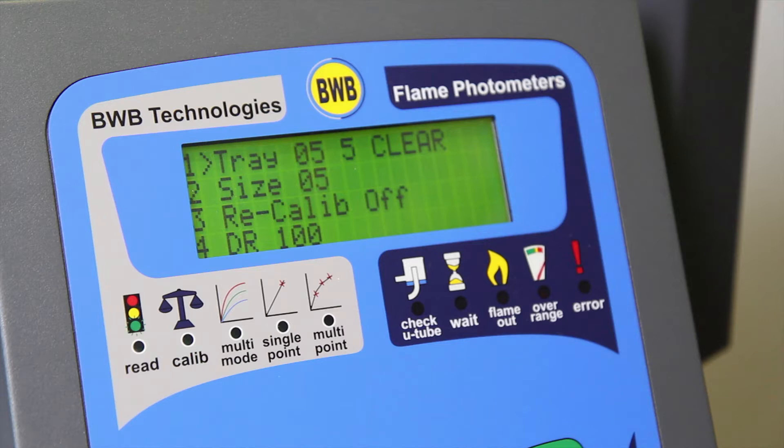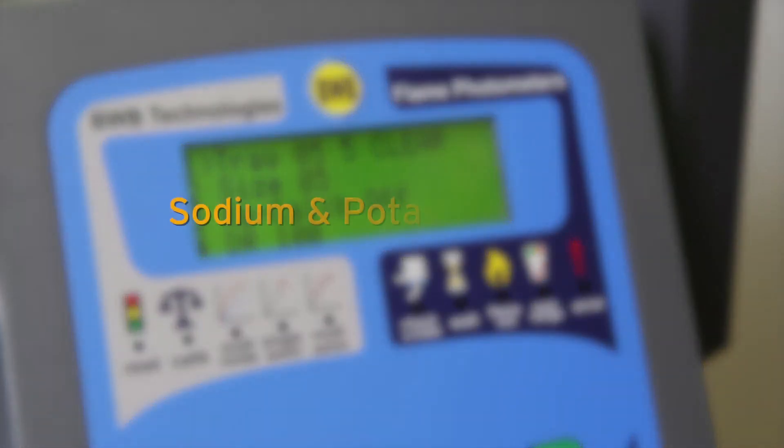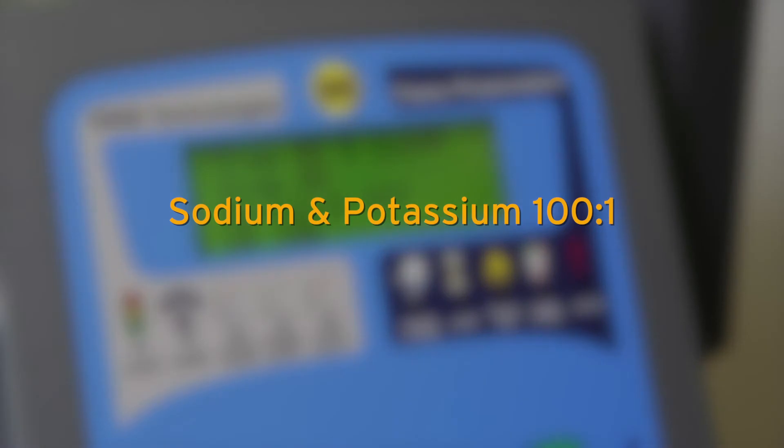Option 4 allows you to view the automatically set dilution ratio. Sodium and potassium have a dilution ratio of 100 to 1, whereas lithium and calcium have a dilution ratio of 10 to 1.